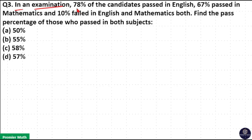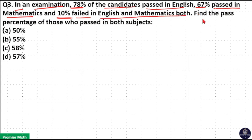In an examination, 78% of the candidates passed in English, 67% passed in Mathematics, and 10% failed in both English and Mathematics. Find the percentage of those who passed in both subjects.